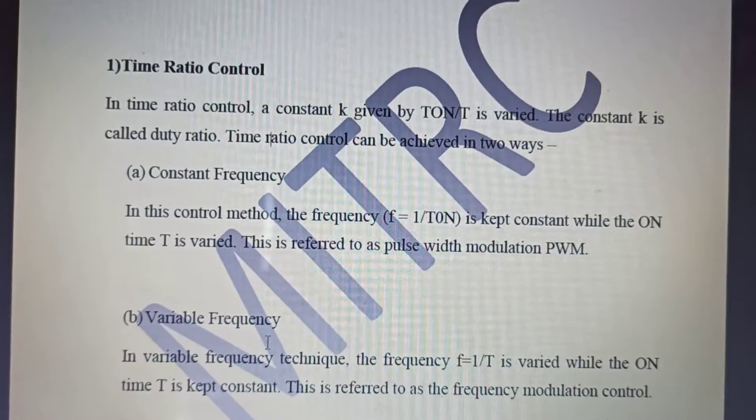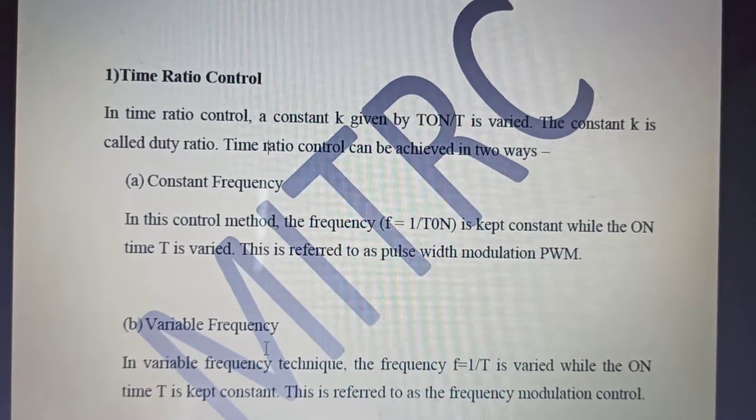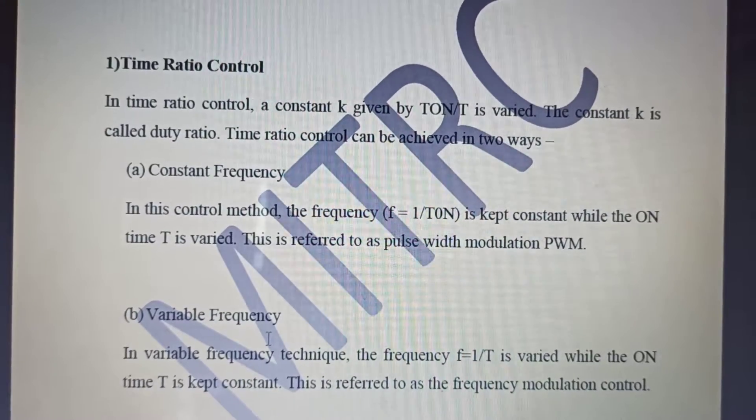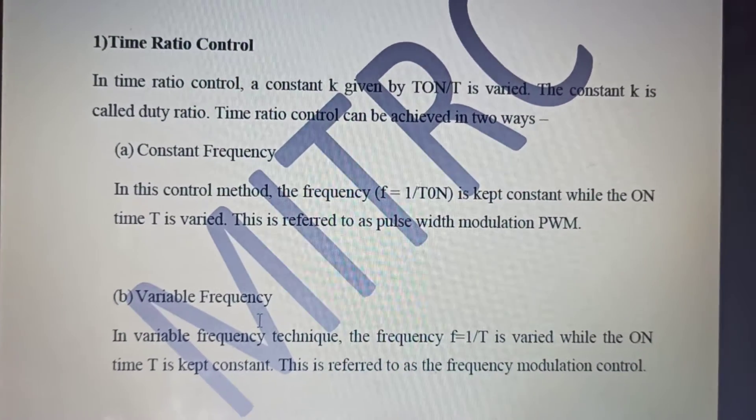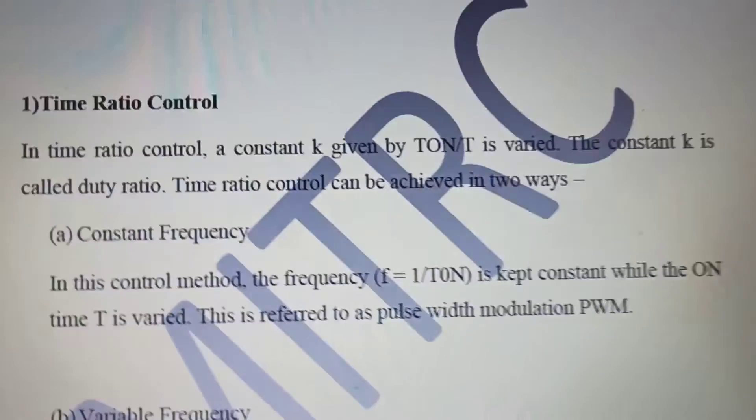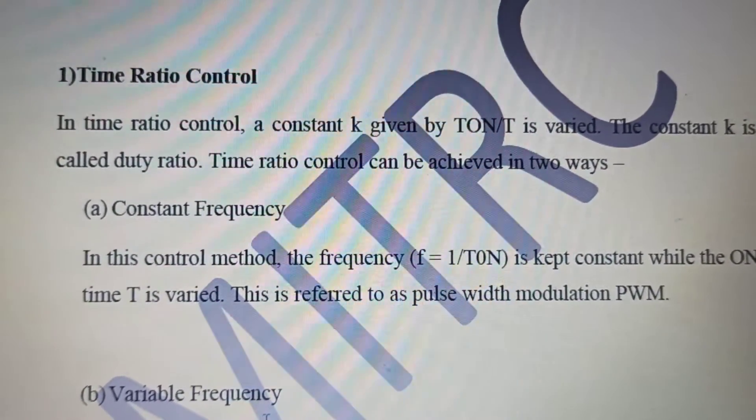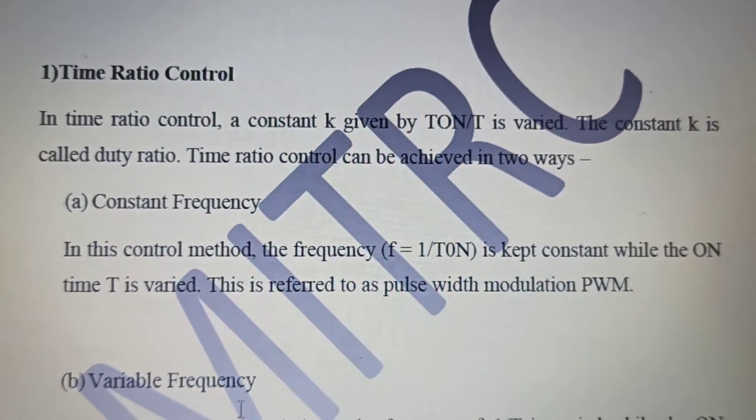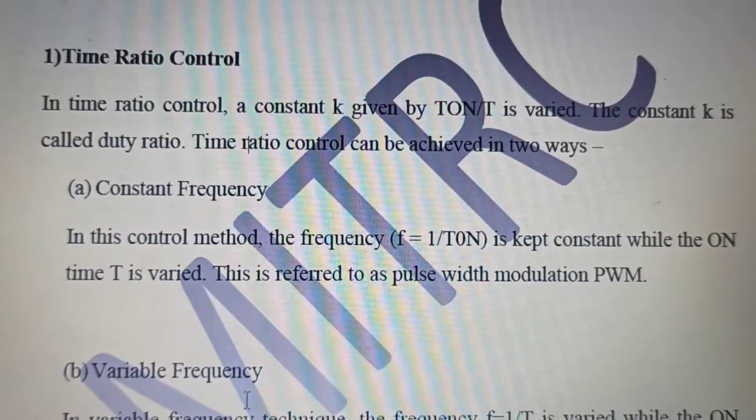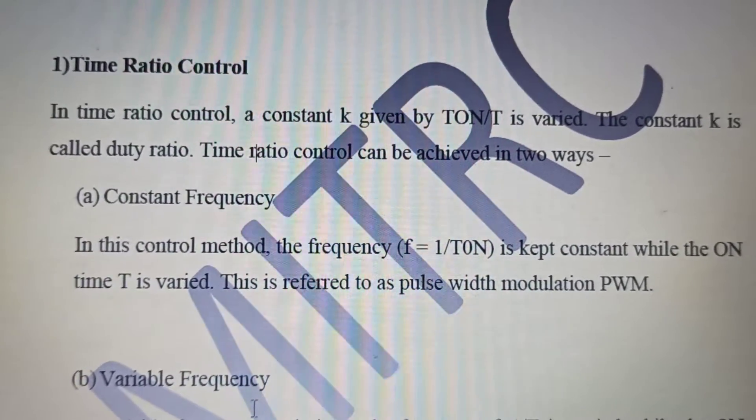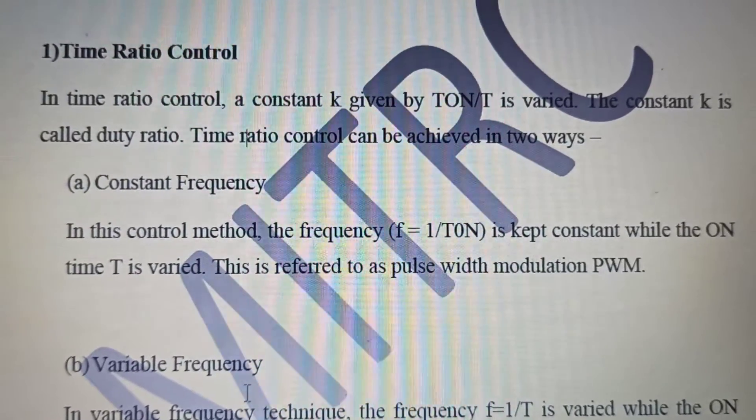This time ratio control can be achieved in two ways. First is constant frequency. In constant frequency, frequency and time have an explicit relation. There is a direct relationship between frequency and time. Upon the variation of frequency, the time will vary. Frequency is inversely proportional to time. So we can say that frequency variation can be kept constant, meaning the time will remain constant.